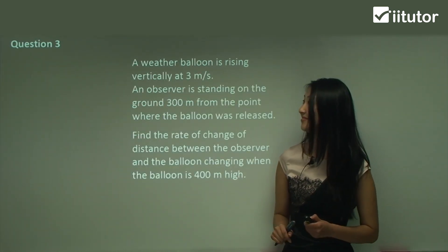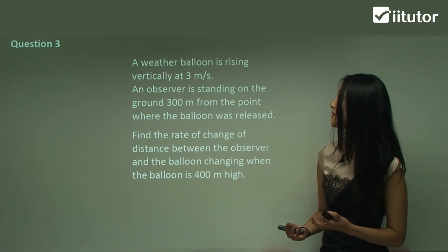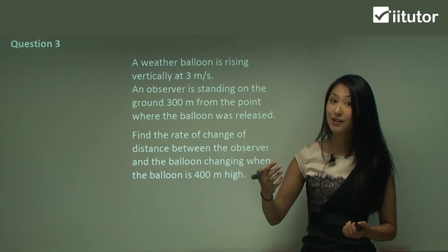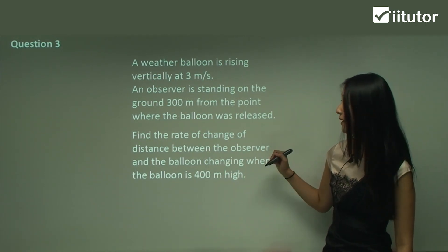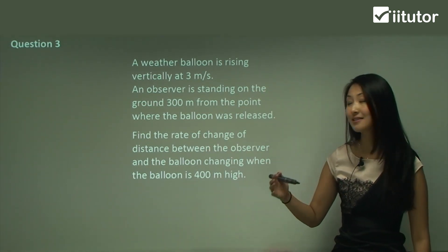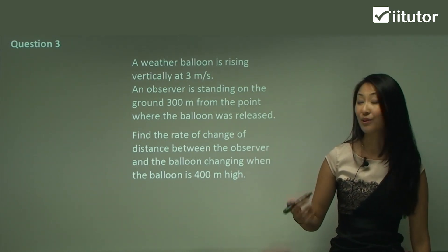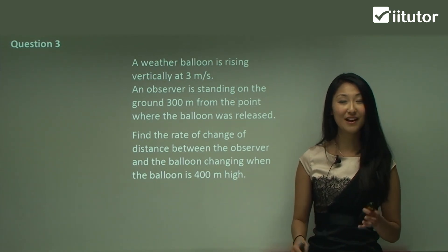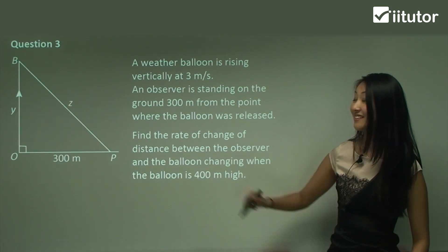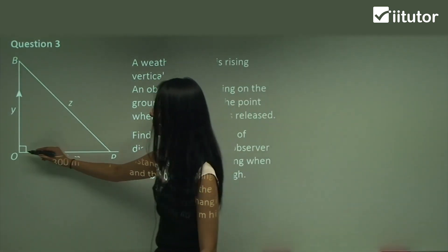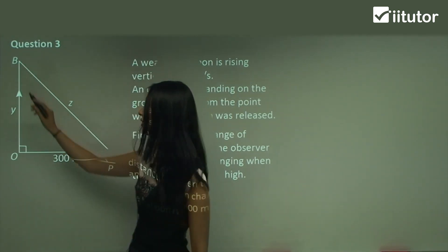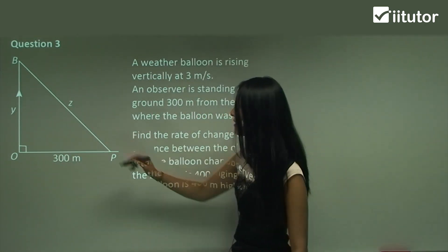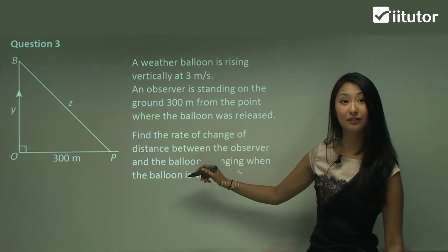Question 3 is more of a problem-solving question. We have a weather balloon rising vertically at 3 metres per second — that's a rate of change. A person is standing on the ground 300 metres away from where the balloon was initially released. We want to find the rate of change of the distance between the person and the balloon when the balloon is 400 metres high. One difficulty is just drawing the diagram. Y represents the distance the balloon has travelled, P is the person, and Z is the distance between the observer and the balloon.